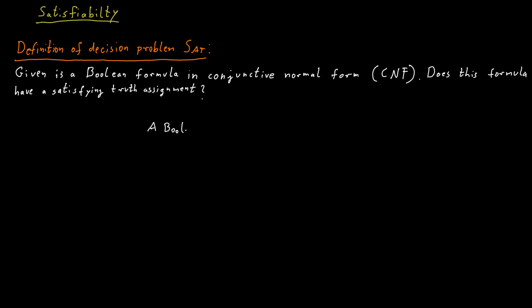So here's what this means, like what is a Boolean formula in conjunctive normal form. Basically, we have a number of Boolean variables or their negations. We call a variable or its negation a literal.